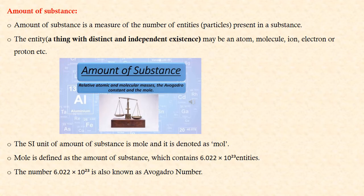The SI unit of amount of substance is mole and it is denoted as mol in lowercase. Mole is defined as amount of substance which contains 6.022 times 10 to the power 23 entities. The number 6.022 times 10 to the power 23 is also known as Avogadro number.